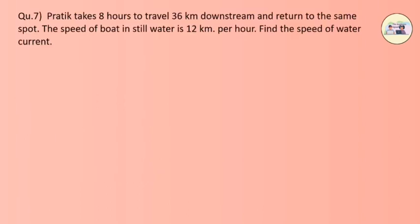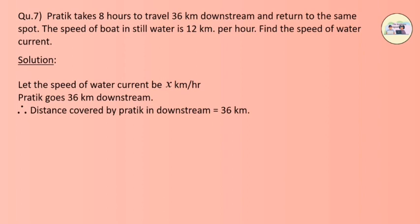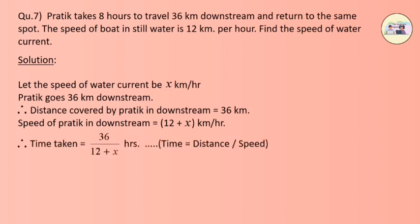Question 7: Prateek takes 8 hours to travel 36 km downstream and return to the same spot. The speed of the boat in still water is 12 km per hour. Find the speed of the water current. Let the speed of the water current be x km per hour. Distance covered downstream is 36 km, speed downstream is (12 + x) km per hour, therefore time taken downstream is 36 / (12 + x).